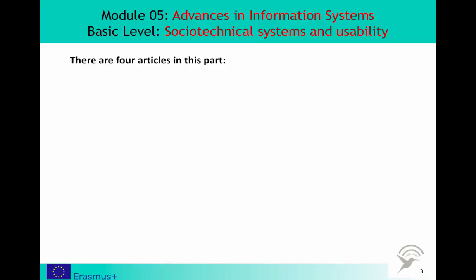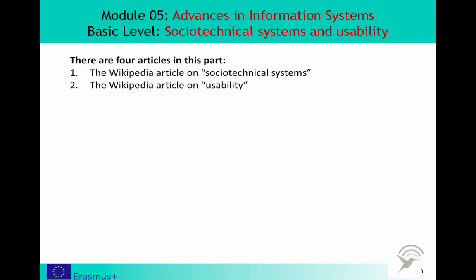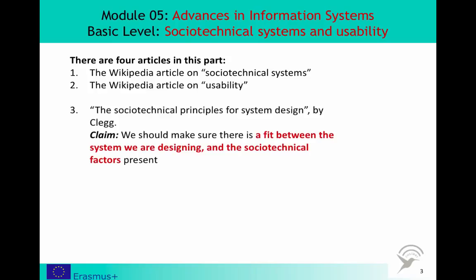There are four articles in this part of the basic level of Module 5. First, the two concepts we have mentioned — sociotechnical systems and usability — are introduced in two Wikipedia articles. The third text is entitled 'The Sociotechnical Principles for System Design' by Clegg.